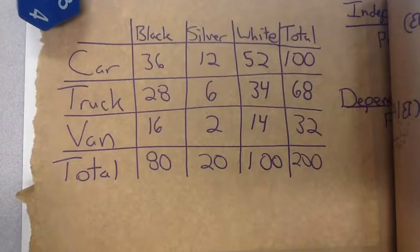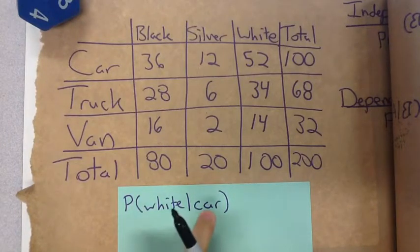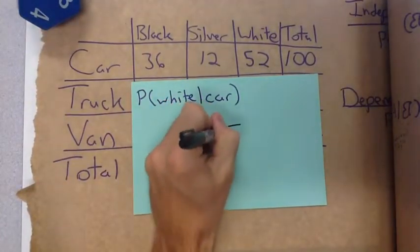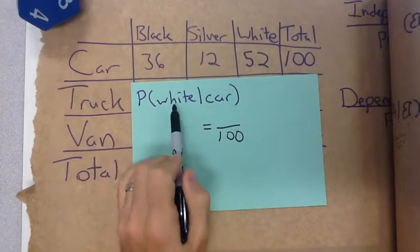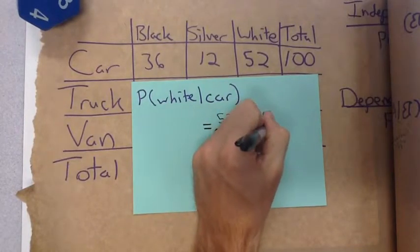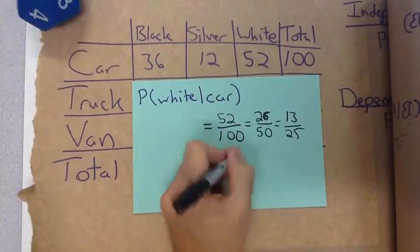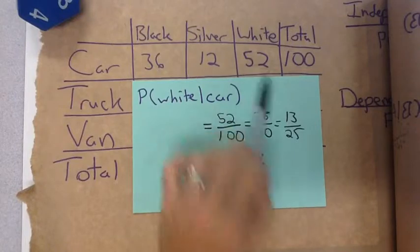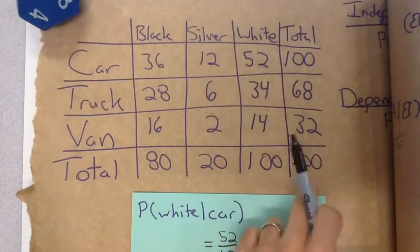If we said what is the probability that it's white given that it's a car - not white and a car, not white or a car - it now has to be a car. We can look in our car row. In our car row there are 100 vehicles. Given that it's a car, it's out of these 100, how many are white? That's 52 out of 100, which is 26 out of 50, or 13 out of 25. We also see from here it's about 52%. Given that it's a car, it is white, is 52% of the cars.